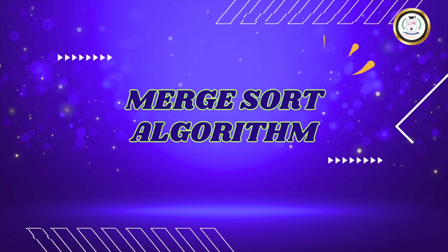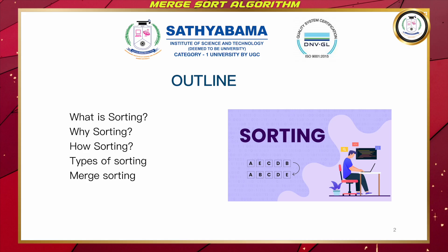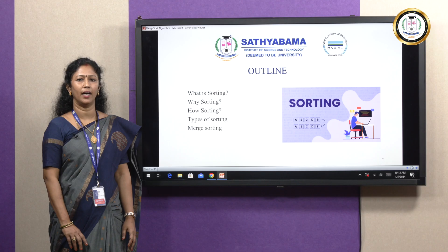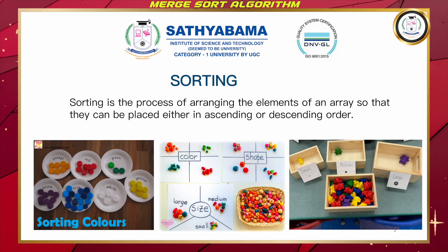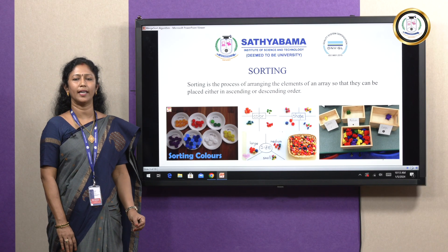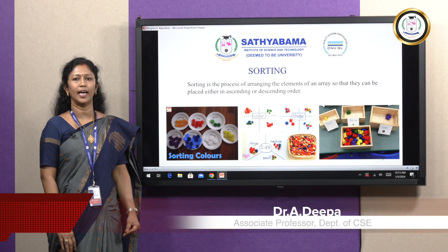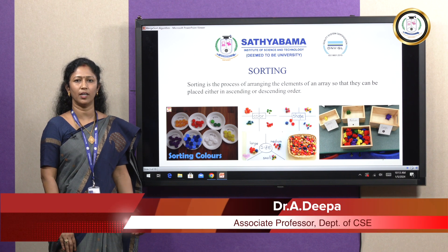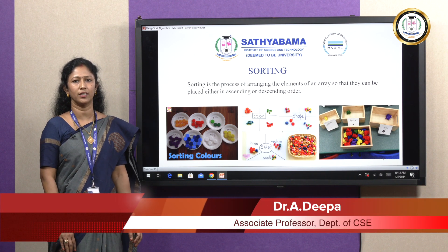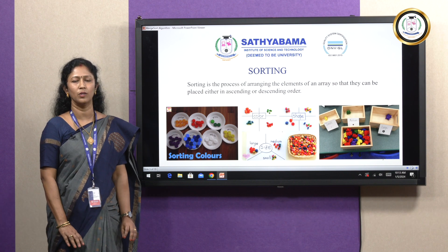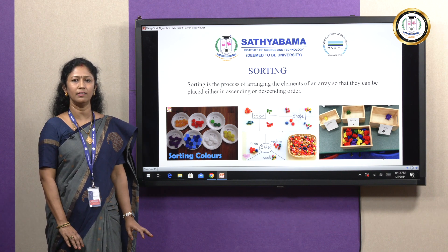The outline for today's lecture is: first, what is sorting and why sorting is required, how sorting is performed, where it is applied, and then we will get into what is merge sort algorithm in detail. Sorting is the arrangement of elements in a particular order based on specific criteria. The criteria can be shape, alphabetical order, or based on reviews for a particular YouTube lecture.